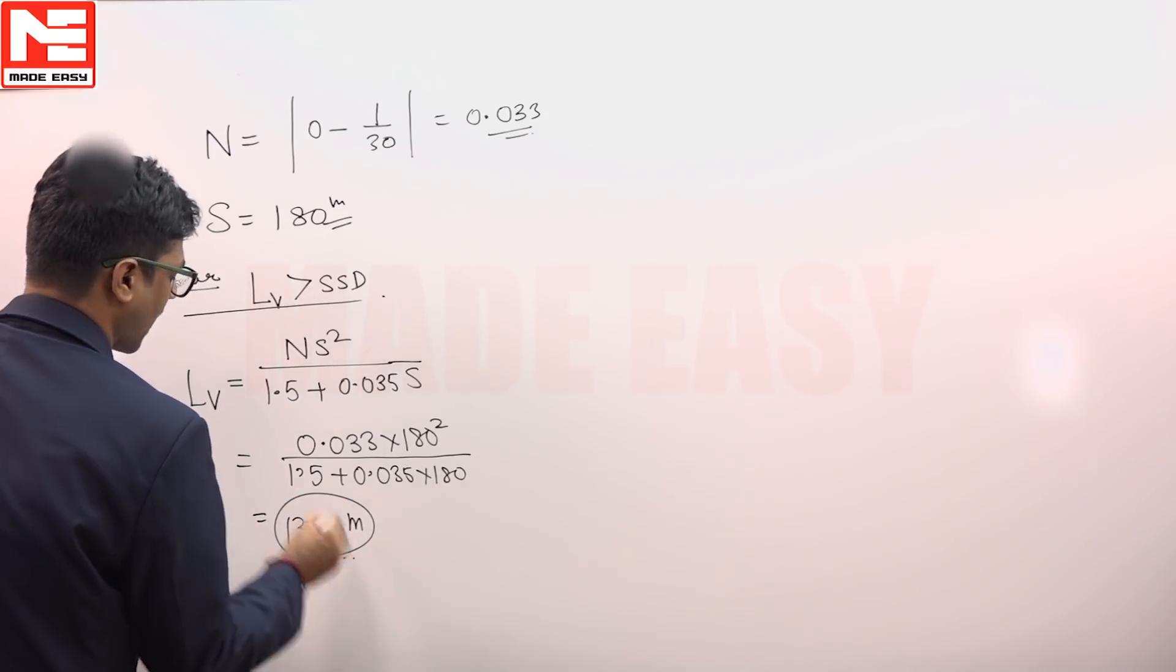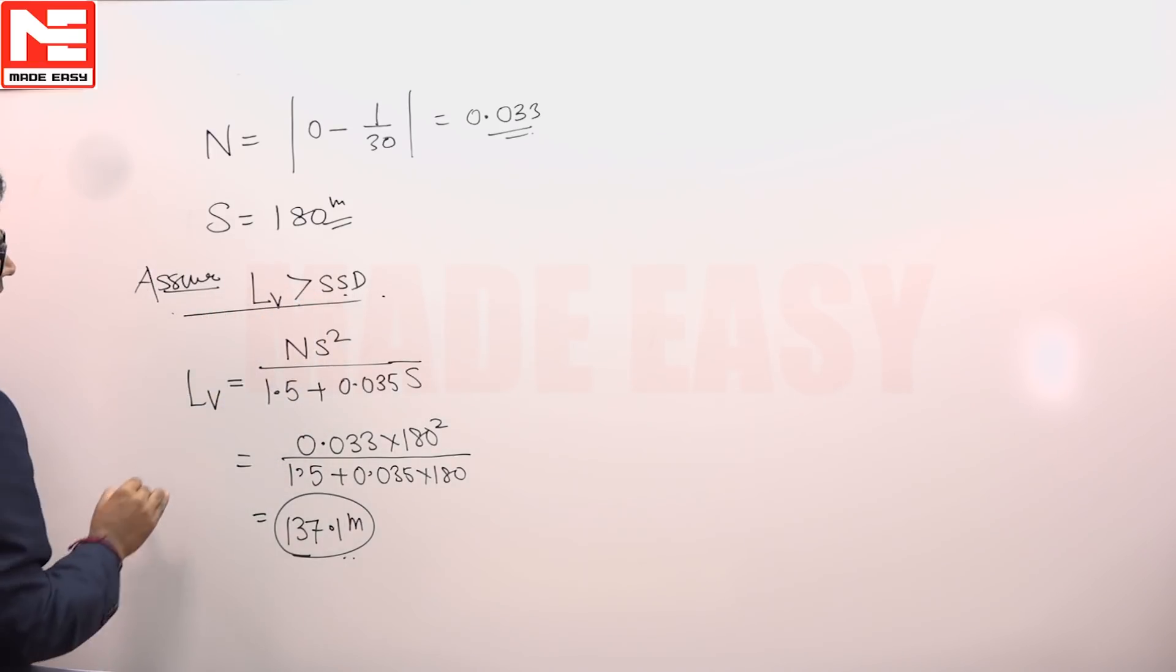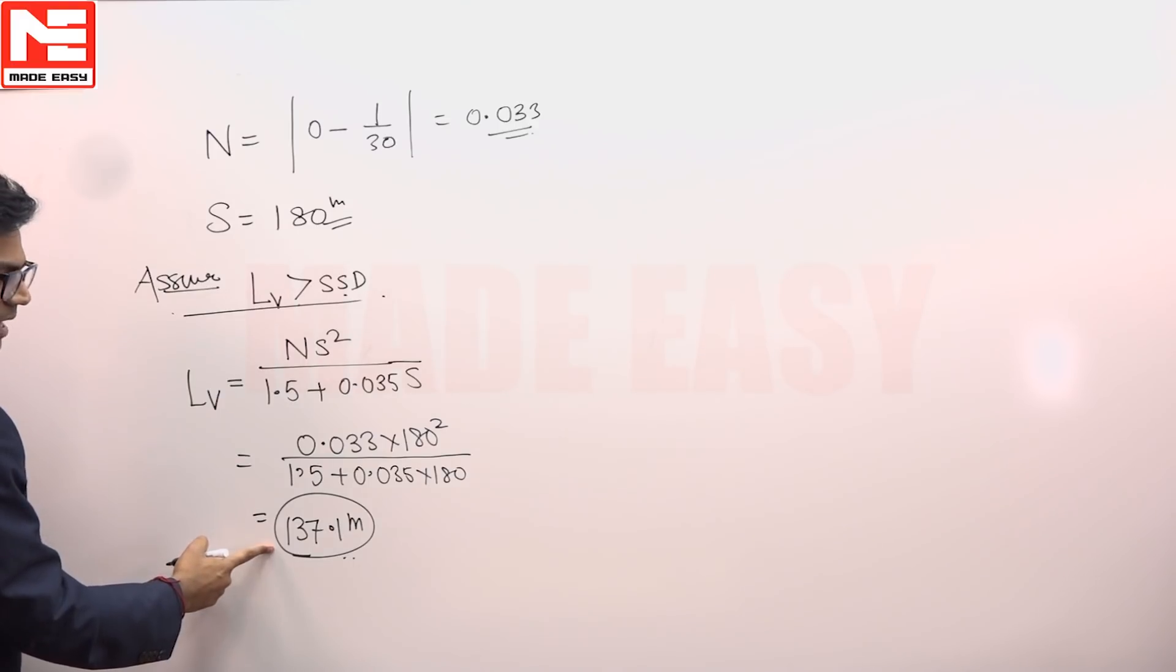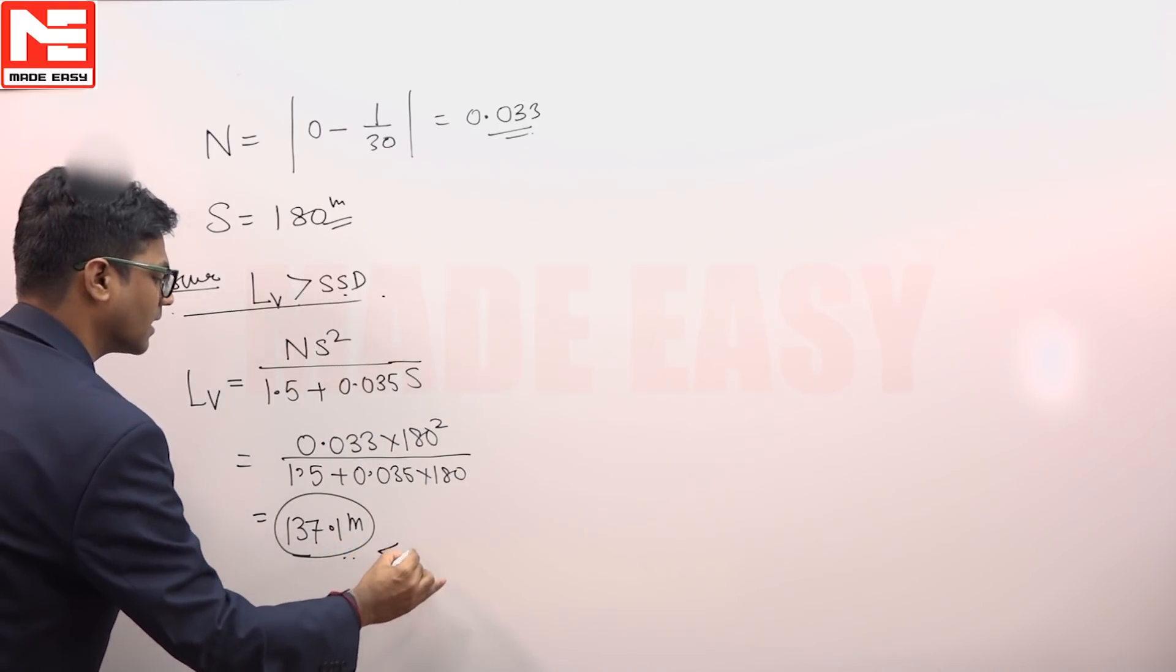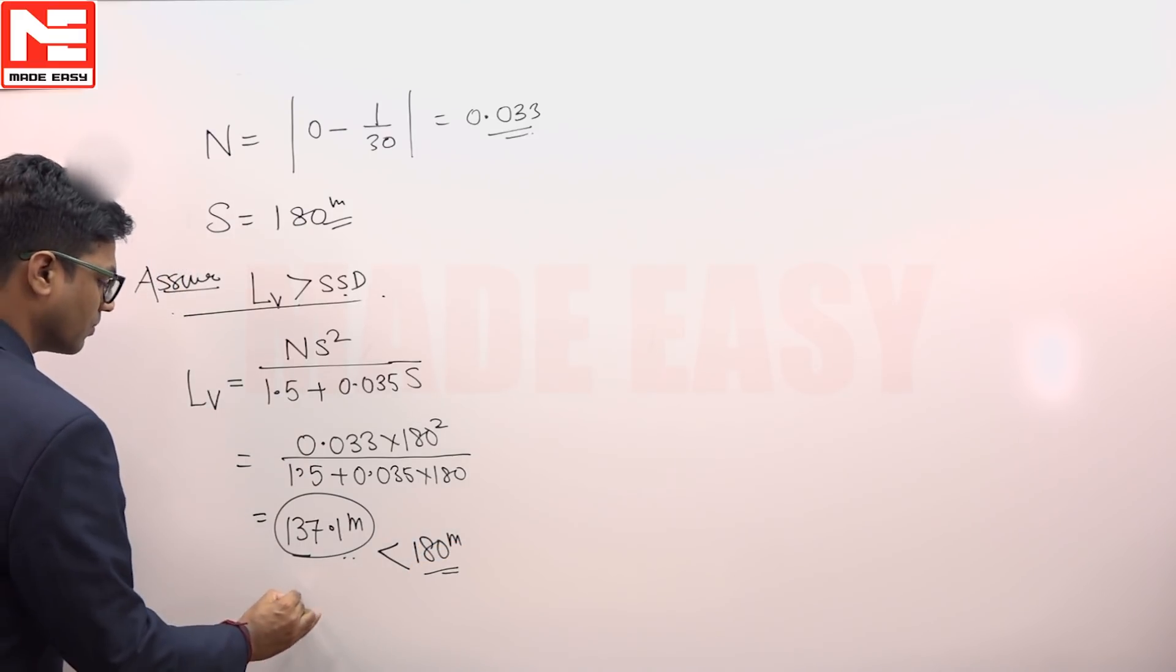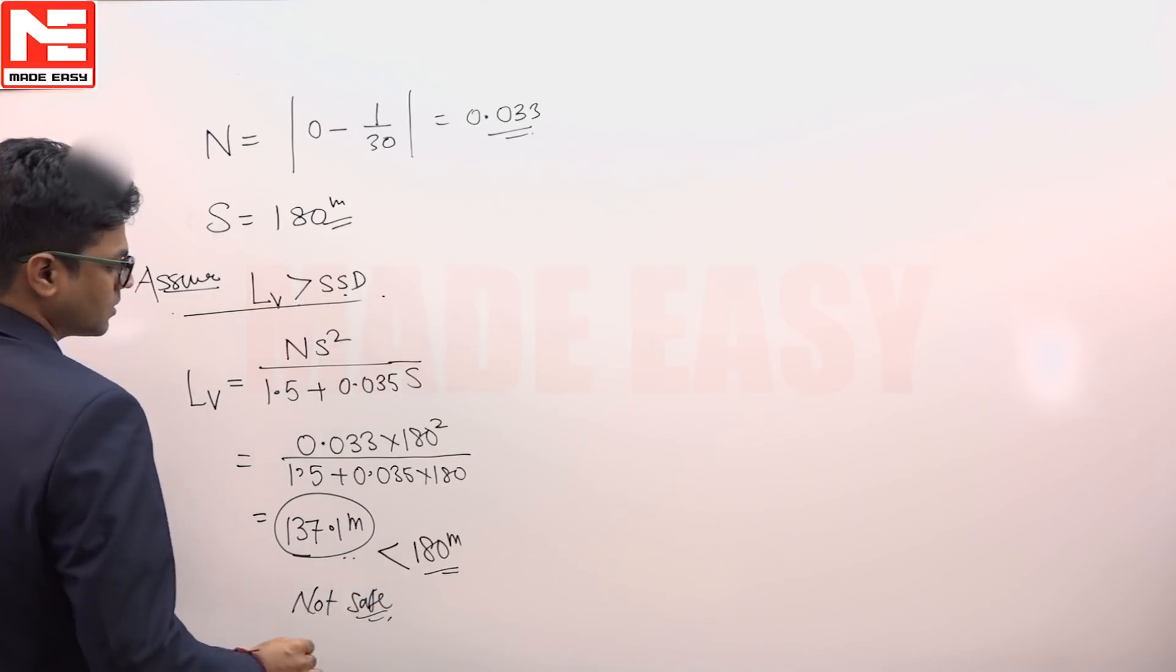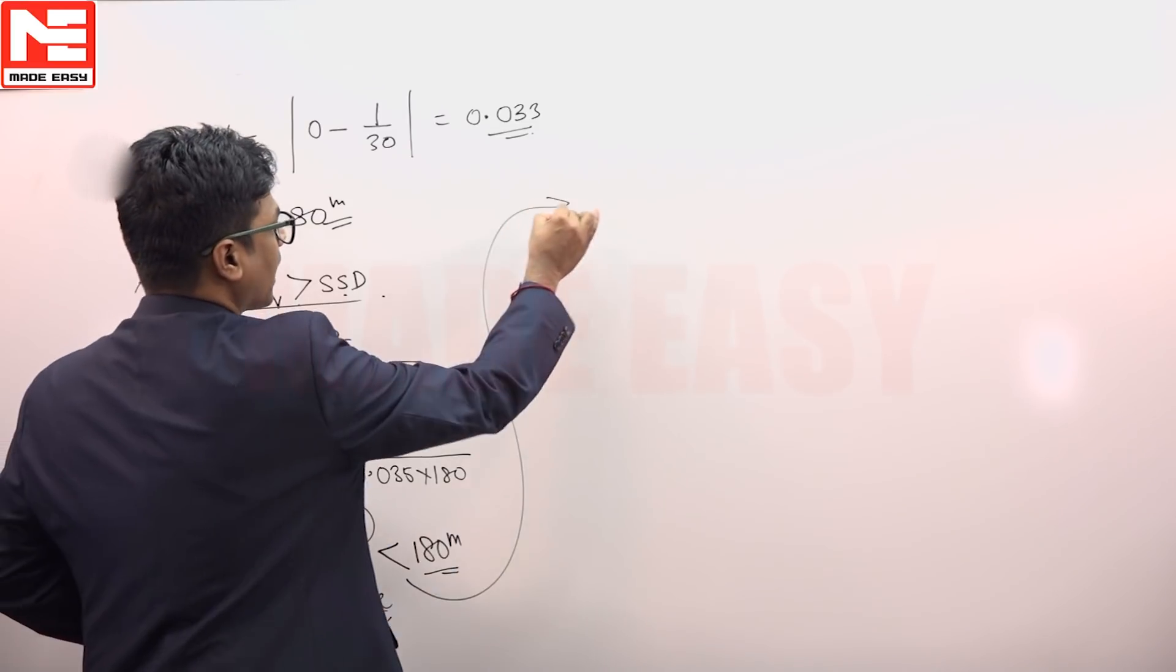But the problem with this answer is we have taken the assumption that LV is more than SSD. But after calculation this LV, this length of valley curve, is coming less than 180 meter SSD. So it is not safe. So in this case we will have to take another assumption.